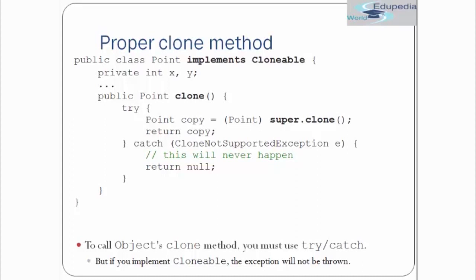This is a proper implementation: we create a new copy of Point by calling super.clone(). Calling super.clone() will return the copy of whichever object is calling it — so if Point3D is calling it, the copy returned will be of type Point3D. We also need to catch CloneNotSupportedException, although this will never happen since we are implementing Cloneable. To call the object's clone method you must use try-catch.